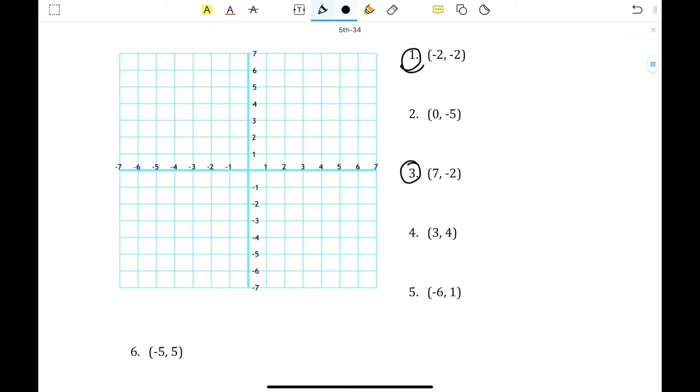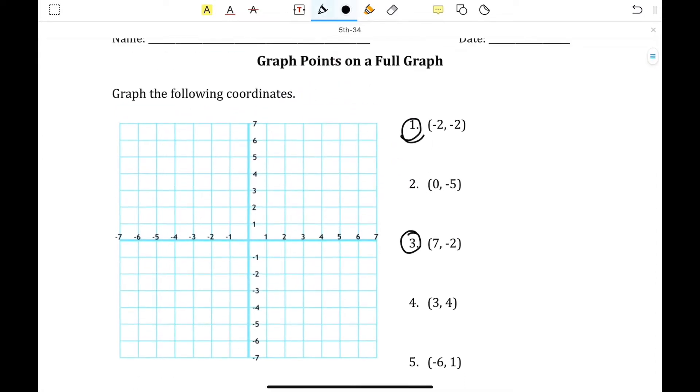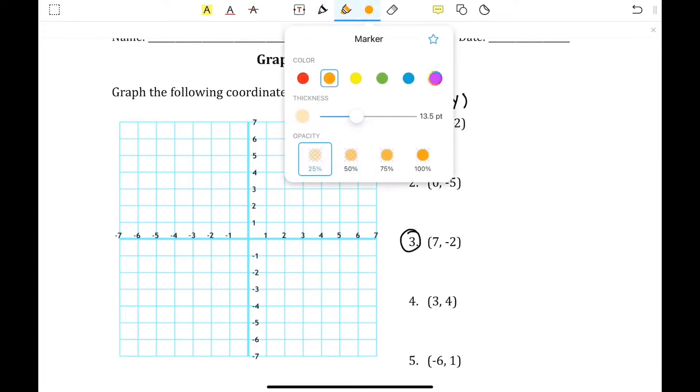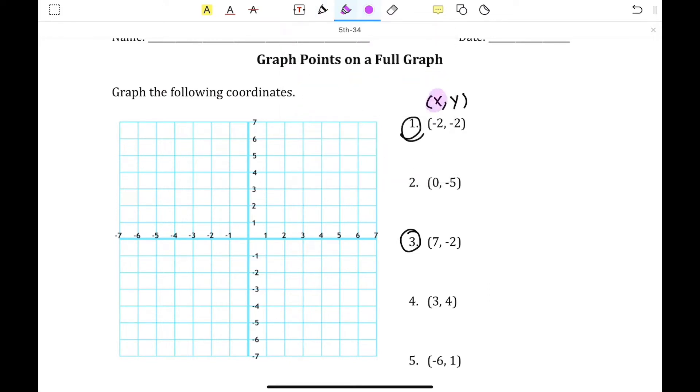So number 1 is negative 2, negative 2. If you saw the previous lesson, the first part represents the x, and the second number represents the y. So for this one, the x, which I'm going to represent in purple, is negative 2, so I'm going to draw a line vertically on the negative 2 to represent the x values of negative 2, and the orange for the y, which is also negative 2, and I will draw it like this. And this is the y-axis, and this is the x.